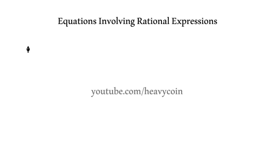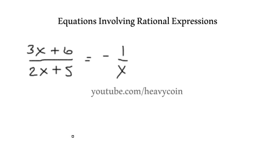We are going to have 3x plus 6 over 2x plus 5 and that's going to equal to negative 1 over x.